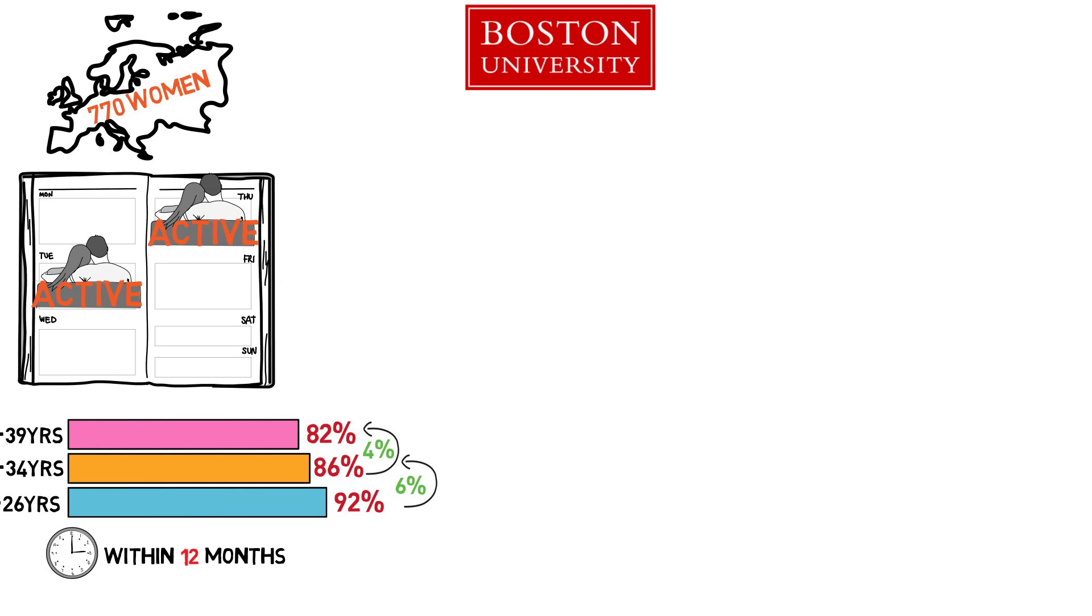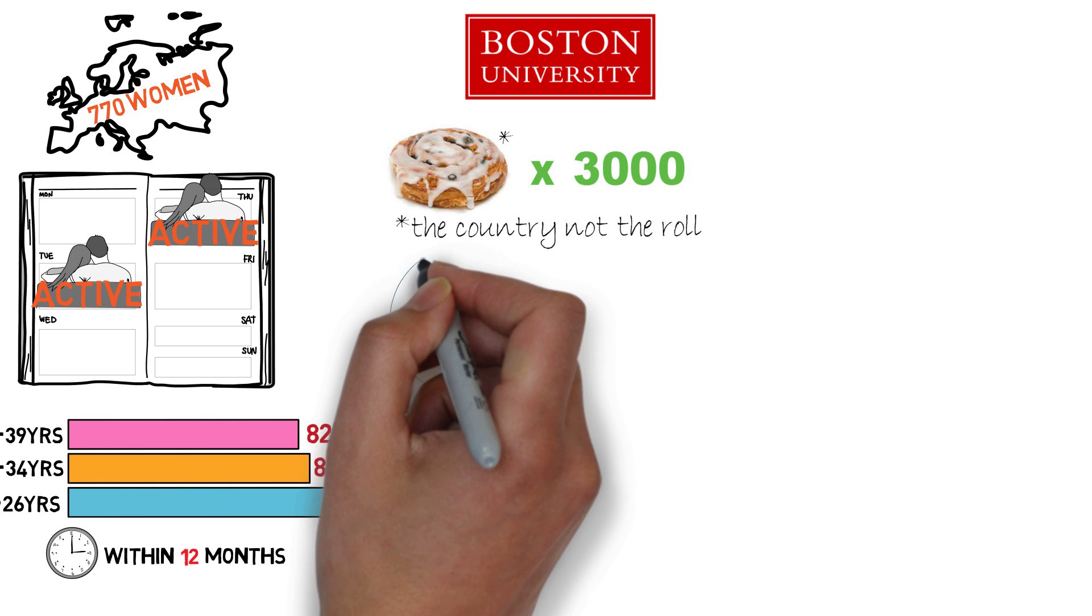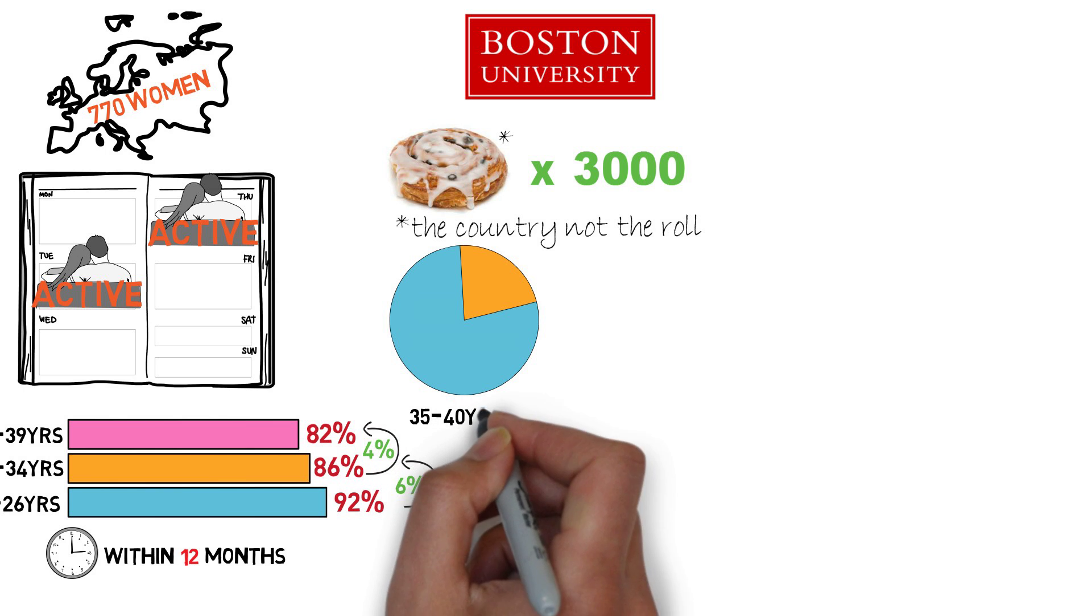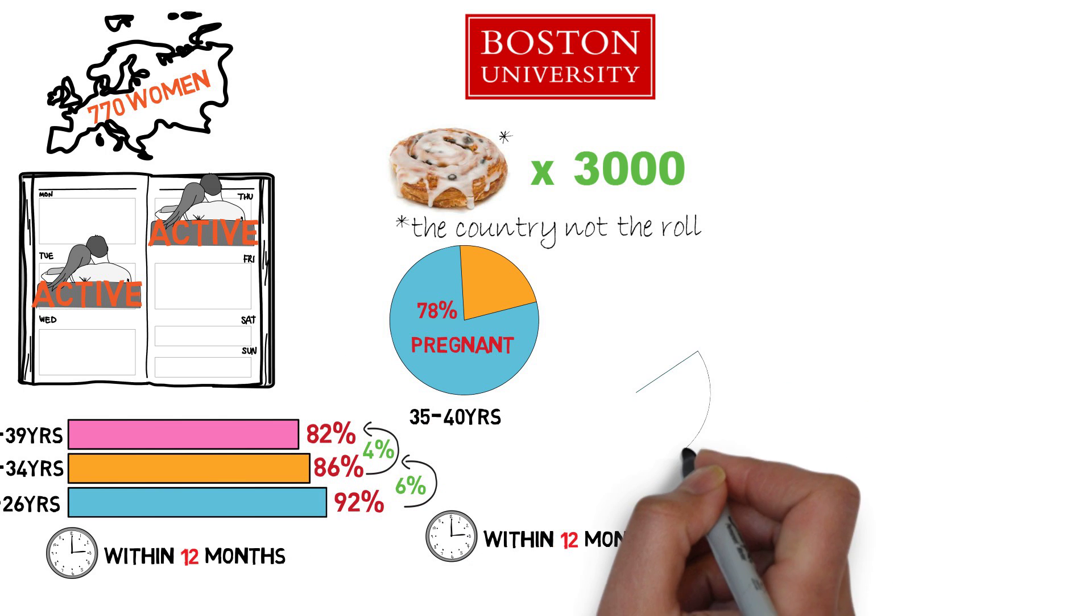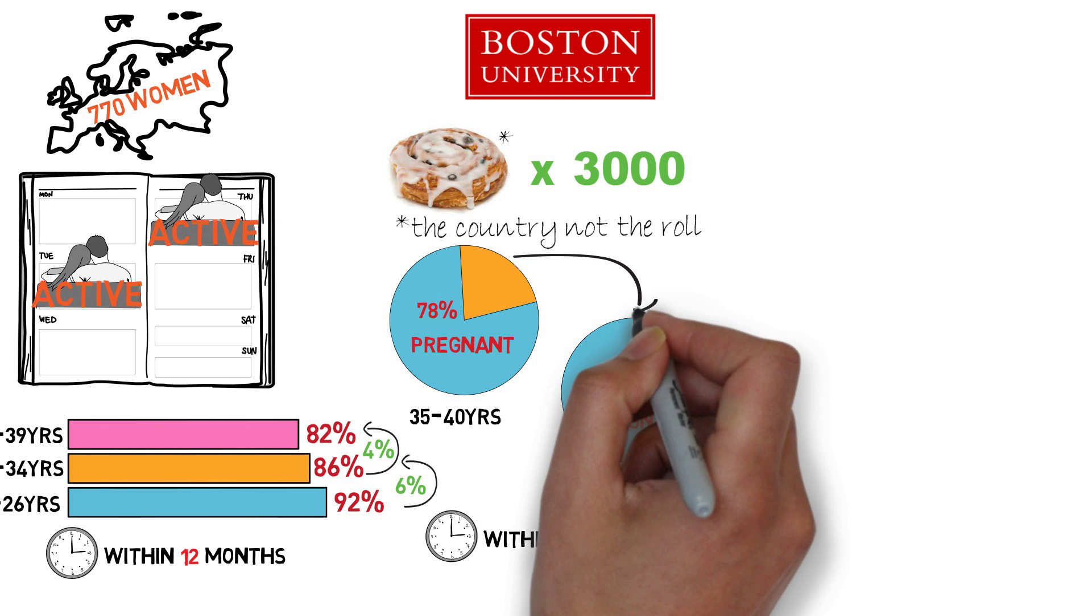Another study from Boston University followed about 3,000 Danish women. It found that of women in their late 30s, 35 to 40, 78% got pregnant within a year, compared to 84% for women 20 to 34. Again, only a slight difference.